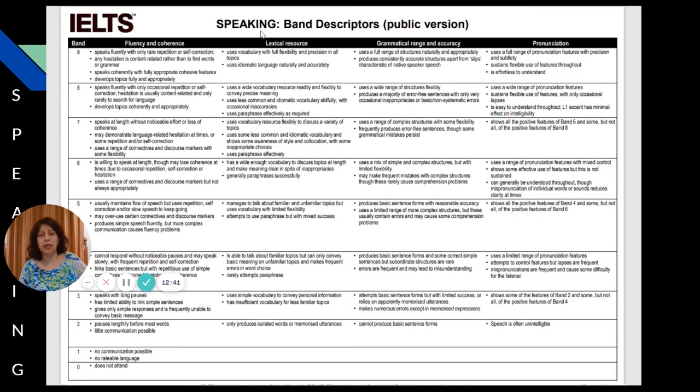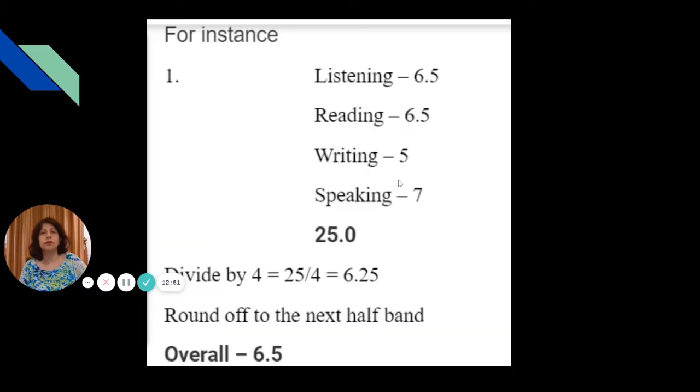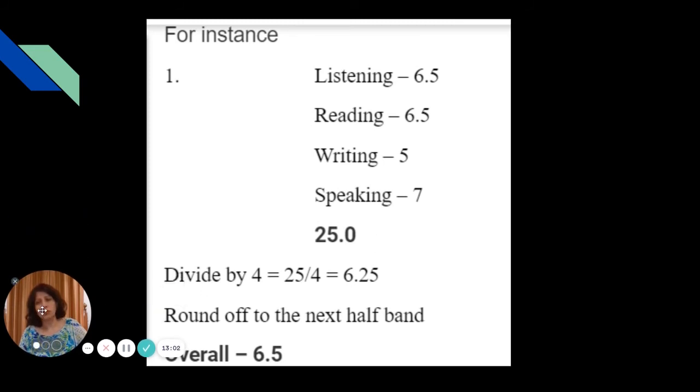Then for speaking, again there are band descriptors based upon fluency and coherence, lexical resource, grammatical range and accuracy, and pronunciation. Let's see how the scores look like. For example, in listening it's 6.5, reading somebody scores 6.5, writing 5, and speaking 7.